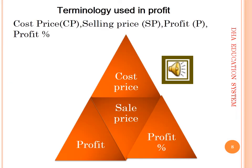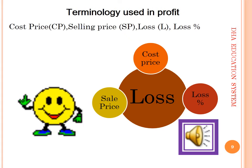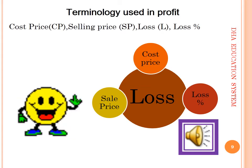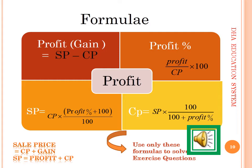For profit calculations, the key terminologies are cost price, selling price, profit, and profit percent. The formula for profit is SP minus CP. For profit percent: profit over CP multiplied by 100 — always divide by CP, not SP. To find SP: CP multiplied by (100 plus profit percent) over 100. To find CP: SP multiplied by 100 over (100 plus profit percent). Learn all these formulas with written practice.